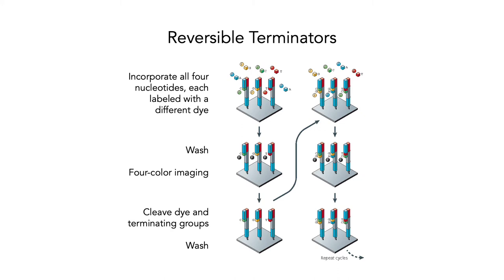Illumina sequencing is really based on the idea of reversible terminators. Thinking back to Sanger sequencing, we had those dideoxynucleotides — they stuck on the end of a growing chain of DNA and then you couldn't add any more nucleotides. Those were terminators, but they weren't reversible. Once you put on one of those dideoxynucleotides, the chain was ended. Illumina does things slightly differently. What you've got here is a little cluster of identical DNA sequences, basically generated by a method very similar to PCR — a little cluster of sequences that should be identical.